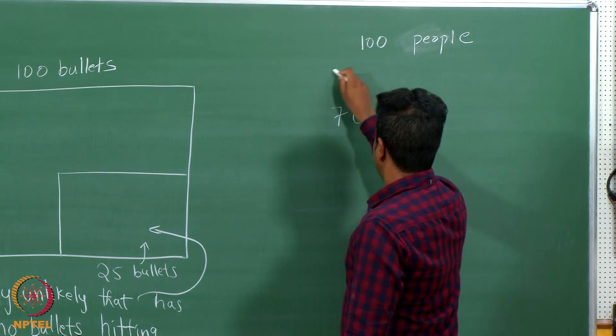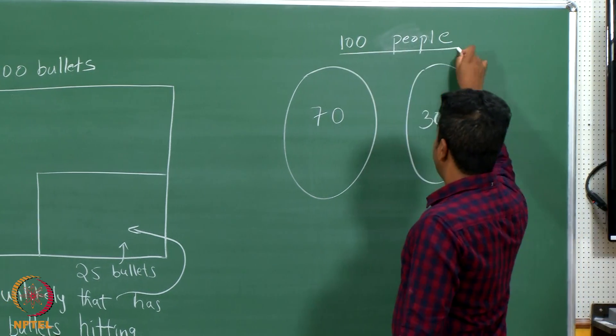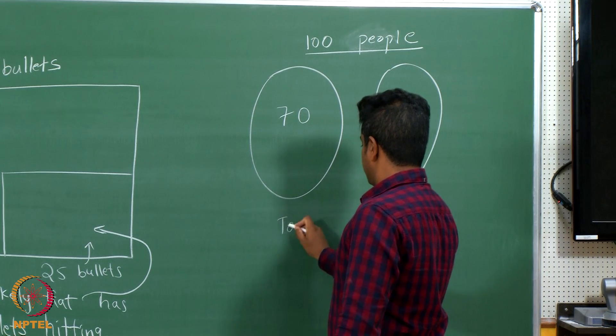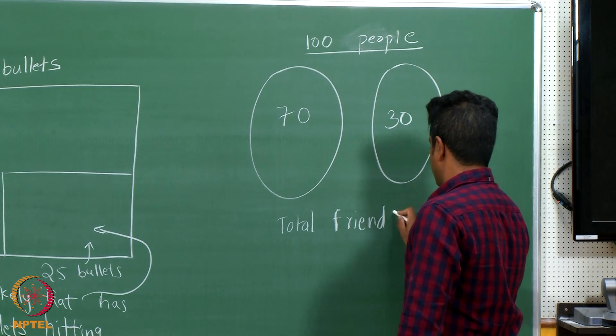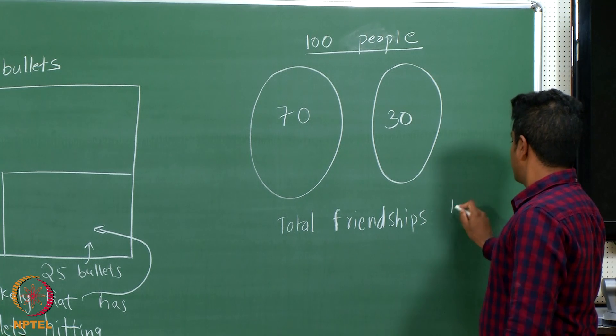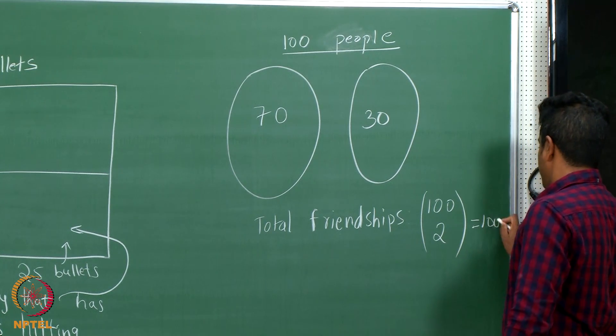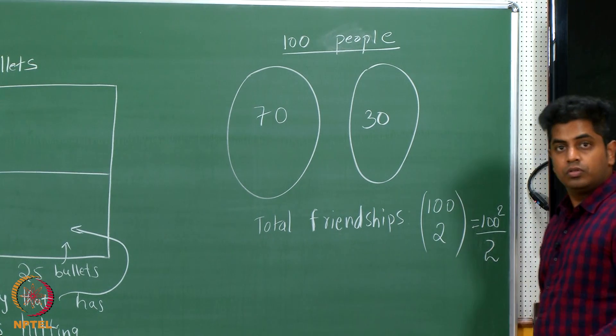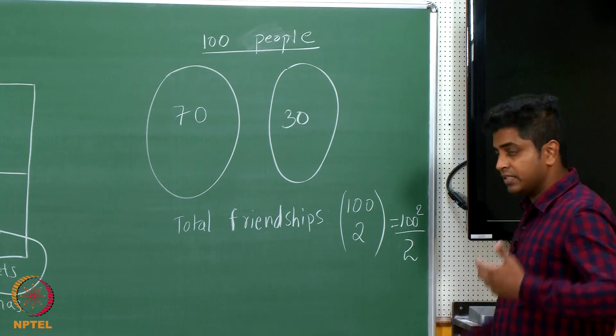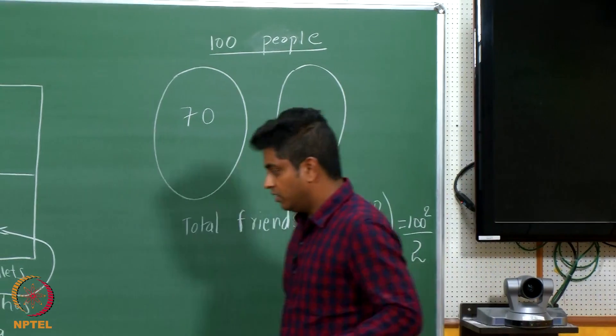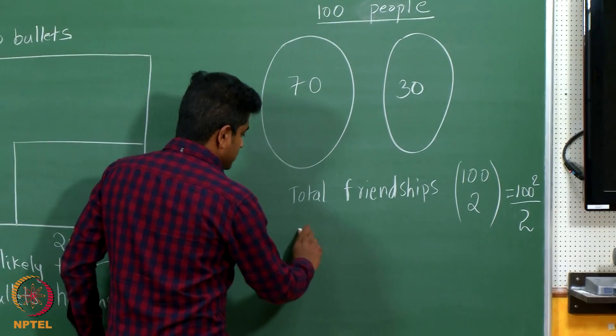Total possible friendships is clearly 100 choose 2, which is roughly 100 squared by 2. It is actually 100 into 99 by 2, you know from day 1 I have been writing it as 100 squared by 2 because 99 can be seen as 100, it is almost close to 100. So there are total number of friendships which is 100 squared by 2, which we all know is 5000.